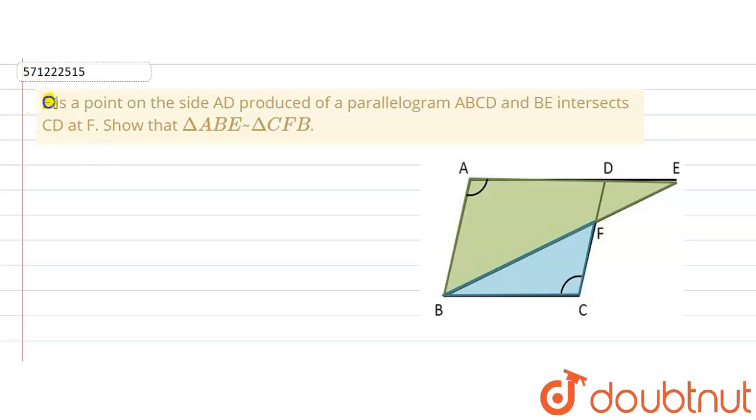The given question says that E is a point on side AD produced of a parallelogram ABCD. There is a parallelogram ABCD and the side AD is produced to the point E. And BE, that is this BE intersects CD, this side CD at F. BE is intersecting CD at F.